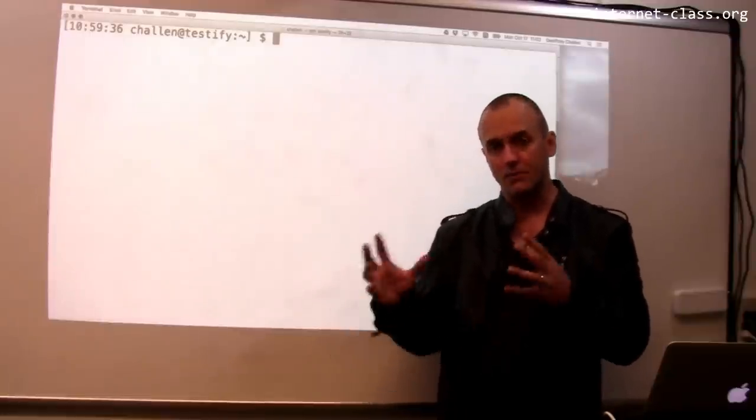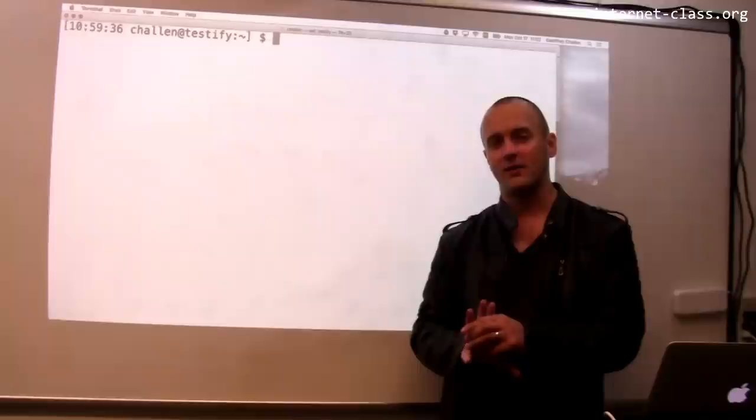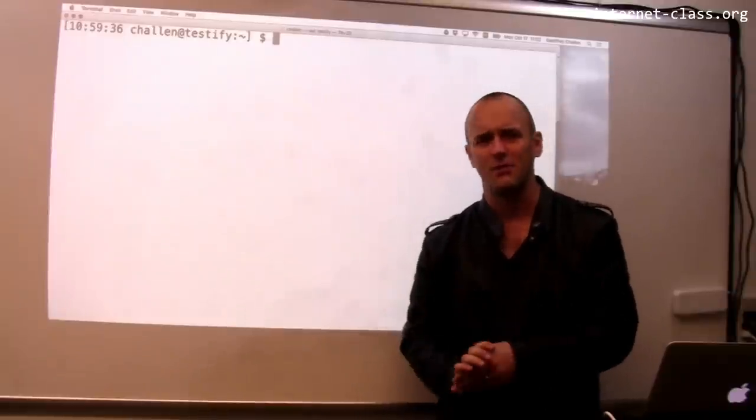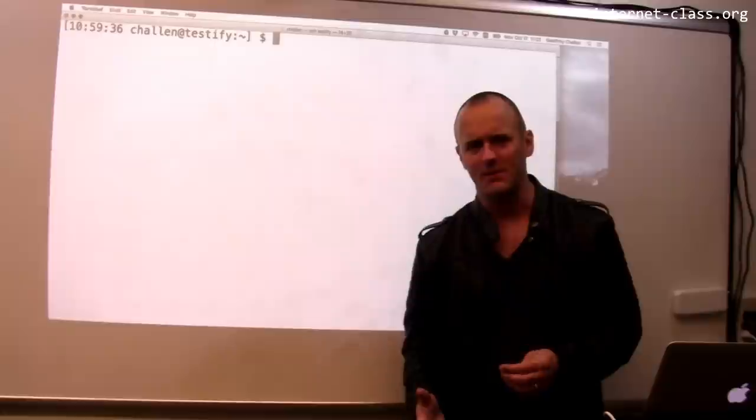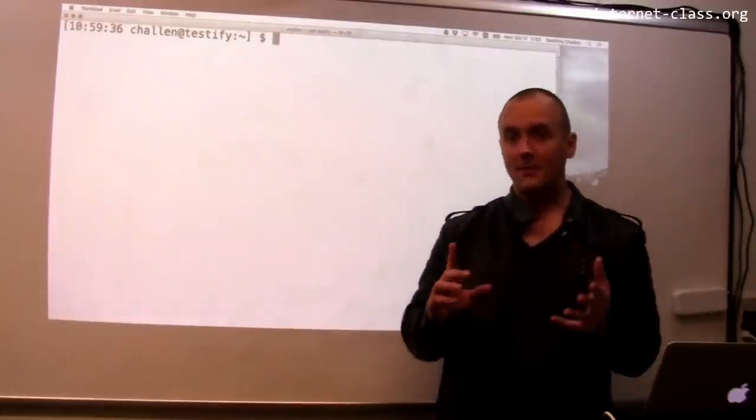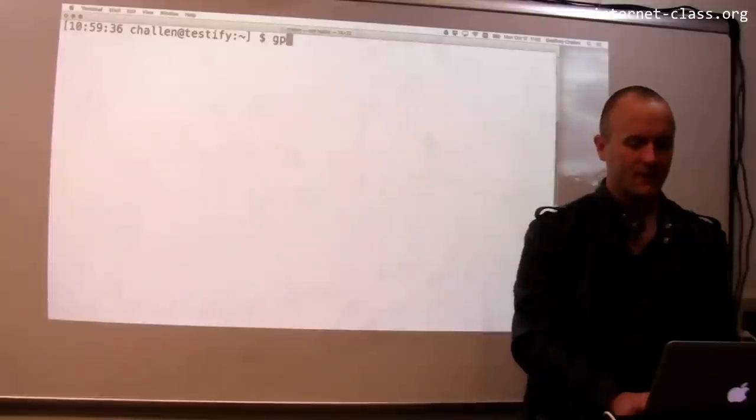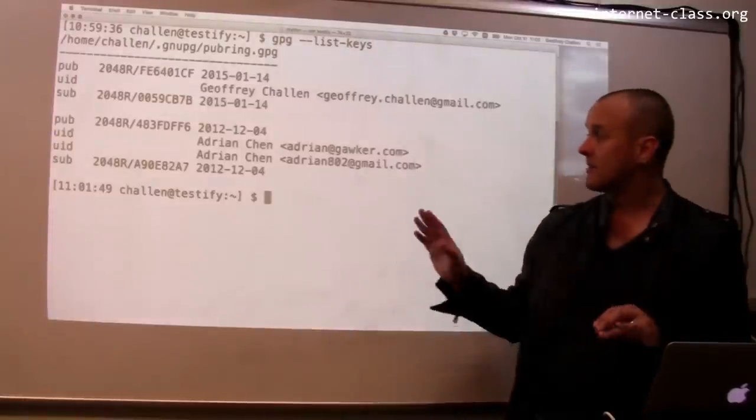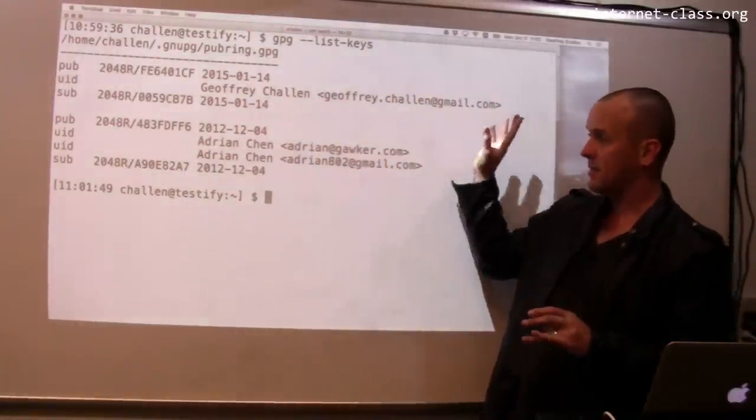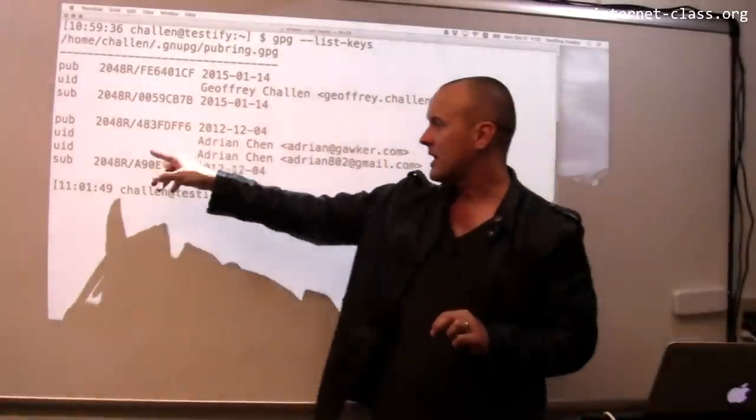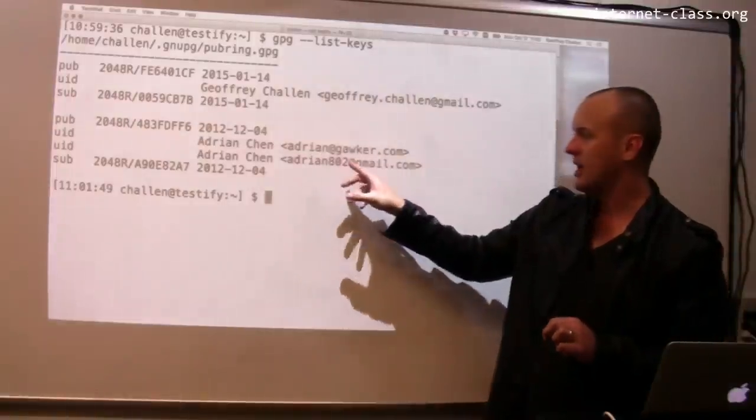So I've imported the public key of a particular person that I want to send a message to. This is just a random person online, I guess they used to work at Gawker.com. So I already have their key and if I do GPG list keys, it'll show me the keys that it has. This is my public key, and then it also has a public key here for someone named Adrian Chen.